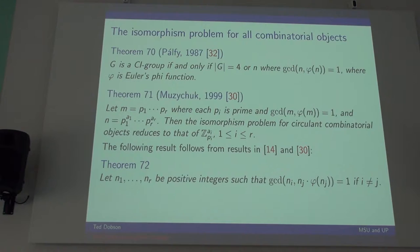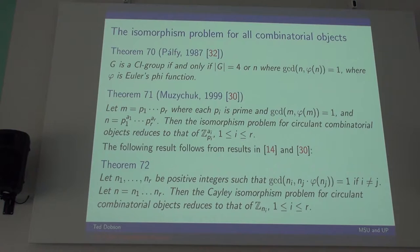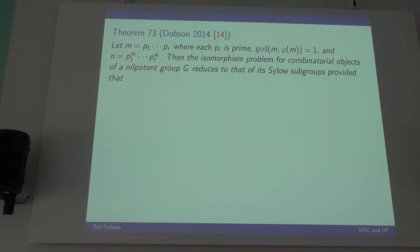Here's another result of mine. Together, it's a combination of two of the results, one of mine and one of Misha's. It's not in the literature, but it really just follows from a result in there and a result in there. If you take just a bunch of positive integers that satisfy this GCD condition, if you take n to be the product of all of those, then the same thing happens. The isomorphism problem for cyclic combinatorial objects reduces to that of the cyclic groups. So here you actually get some more primes, but you still have to have the appropriate conditions.